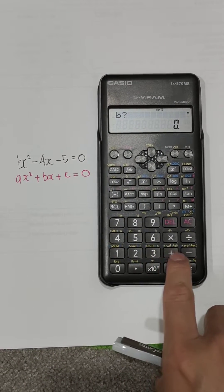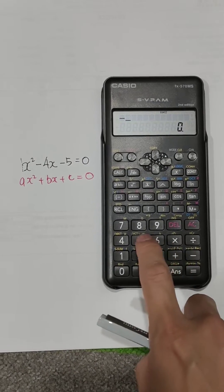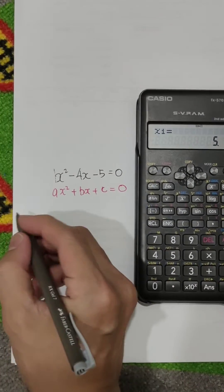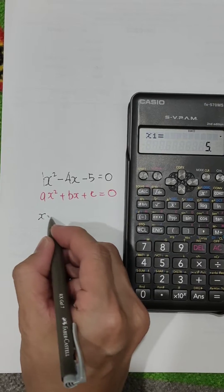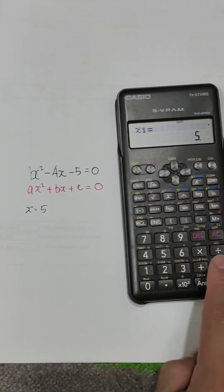Then B is negative 4. C is negative 5. So you get the answer. The first answer is 5. The second answer, you press equal again.